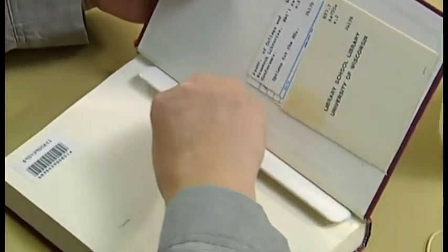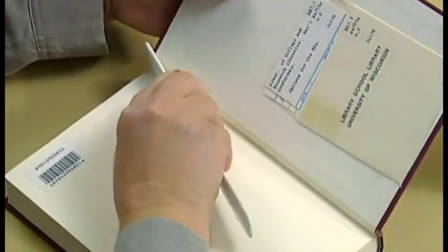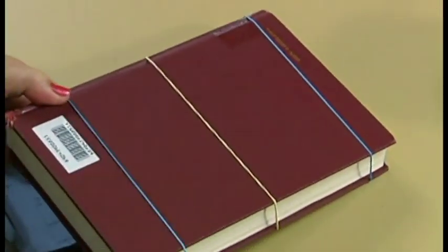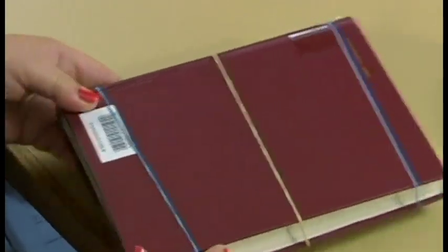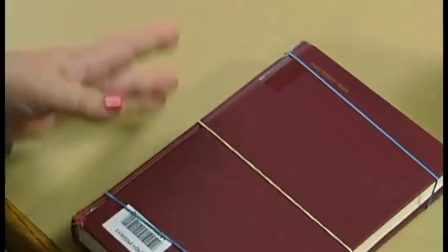Smooth the end sheet with a bone folder and close the book. Apply the rubber bands or book weight and set it aside to dry overnight.